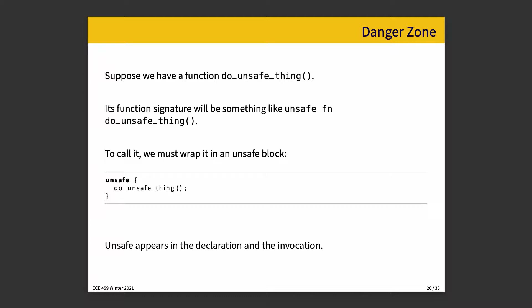Presumably a code reviewer would ask whether you've carefully read the documentation of the function in question. Are you sure you're calling it with the right arguments? For an unsafe function, you should be careful to check that you're doing this correctly. The code reviewer should focus in on unsafe blocks and scrutinize them carefully.